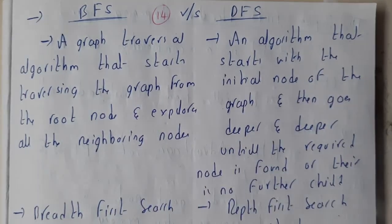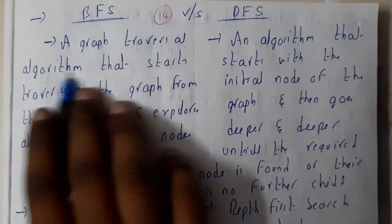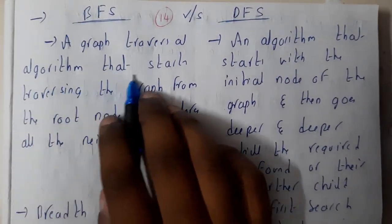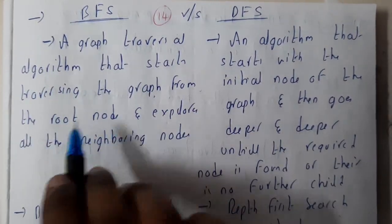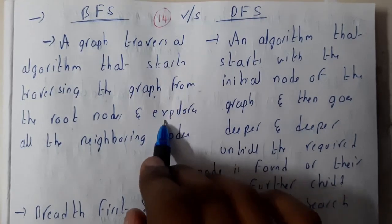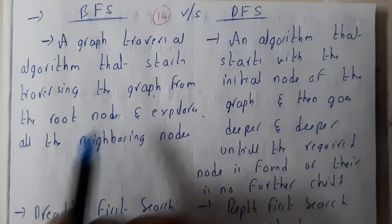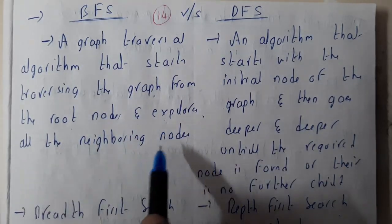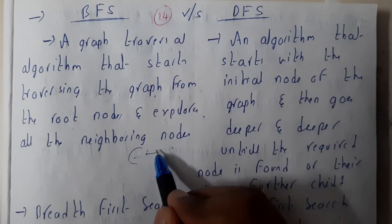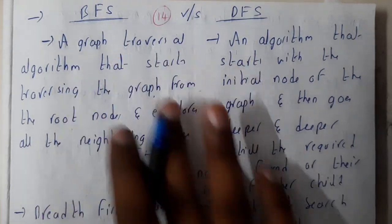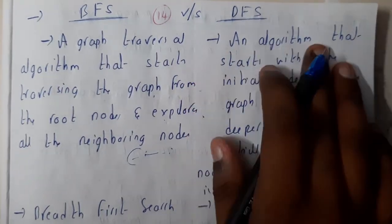In breadth first search, it is a graph traversal algorithm that starts traversing the graph from the root node and explores all the neighboring nodes. You can say that it travels level by level.